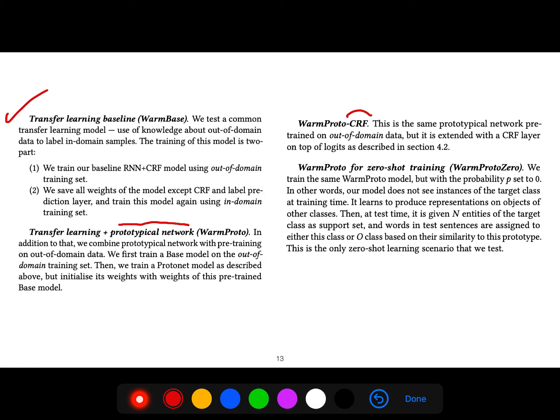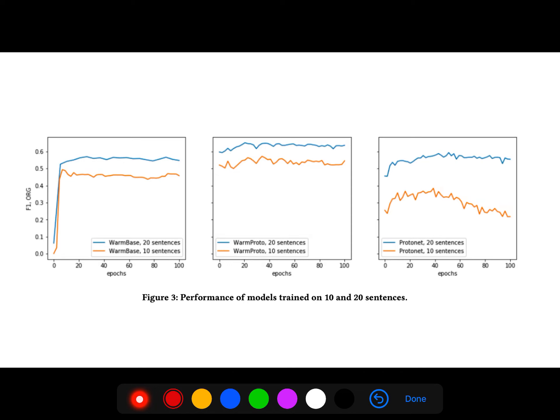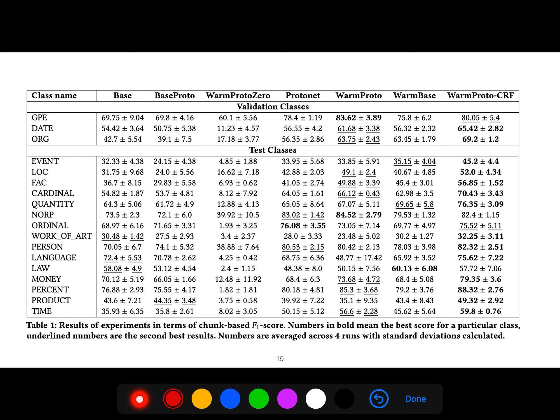Zero-shot training shows the performance of models trained on 10 and 20 sentences. They have different class names for test classes. For each of these configurations—base, base proto, warm proto, warm base, warm proto CRF—they have different F1 scores, with some scores being significantly higher than previous results.